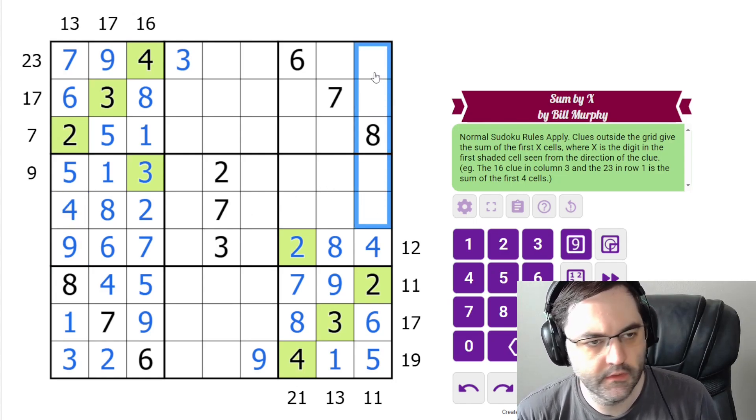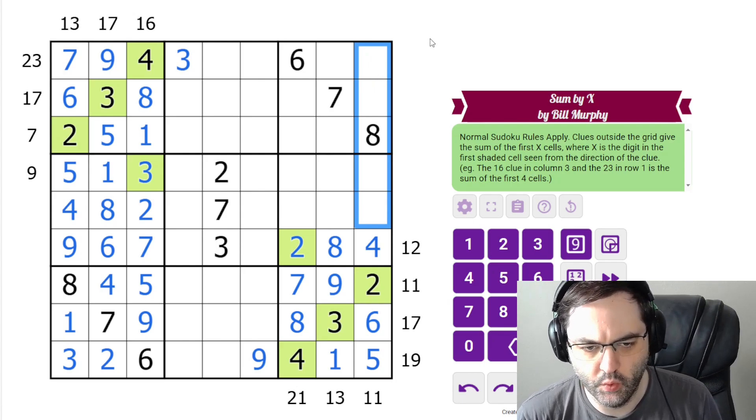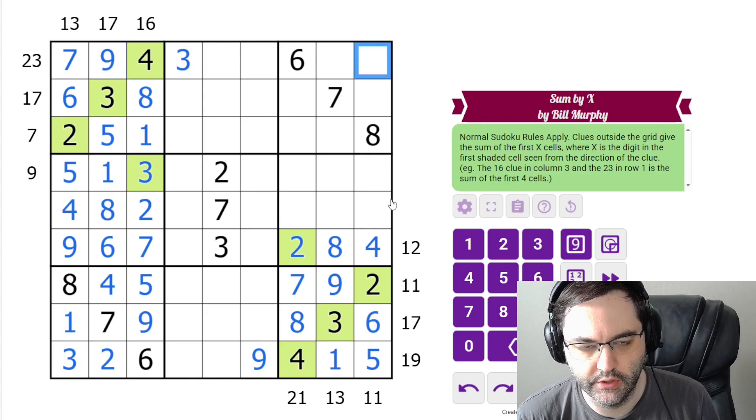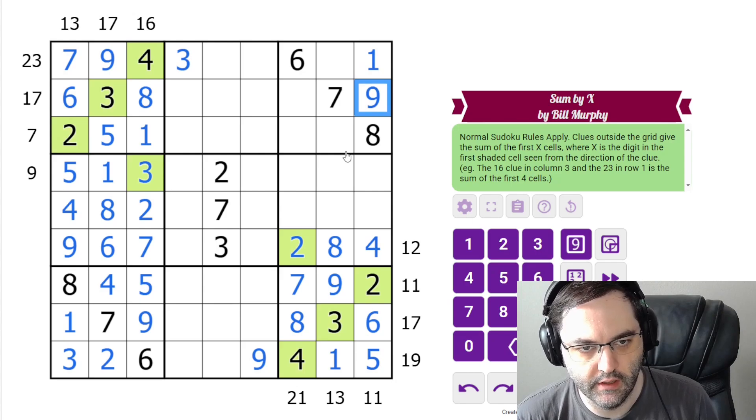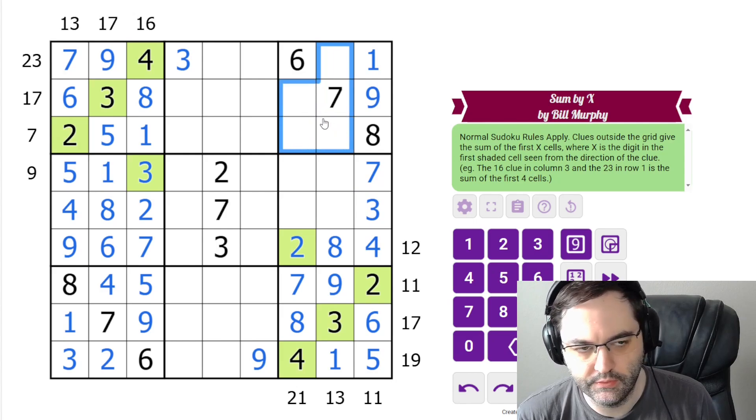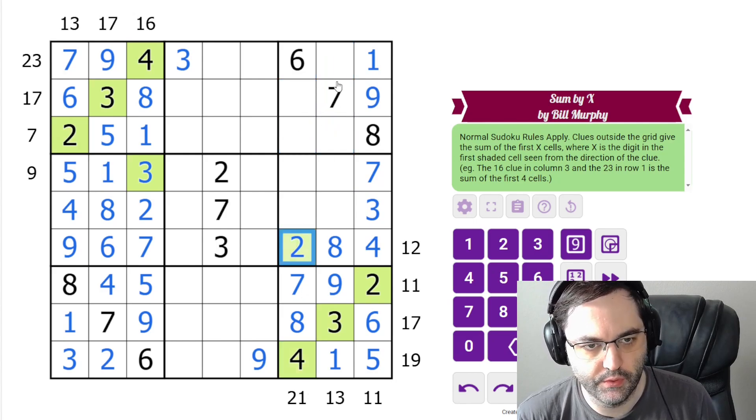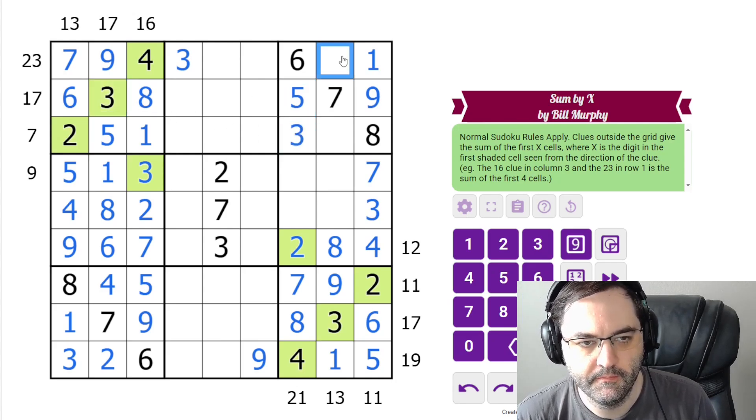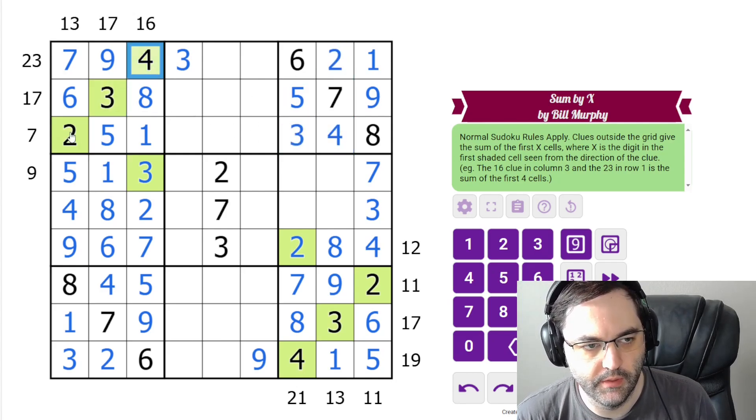Alright, this column, we still need 1, 3, 7, 9. There's a 9, a 3, and a 7 looking at this cell, so this is 1. There's a 3 and a 7 looking at this cell, so that's 9. And there's a 7 looking at this, and a 3 looking at this. These are 2, 3, 4, 5. We have 2 and 4 here, so this is 3, 5. And we know the order from that 3. 2, 4, resolved by the 2 and the 4.